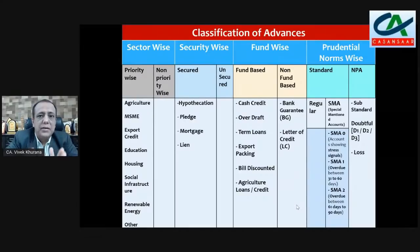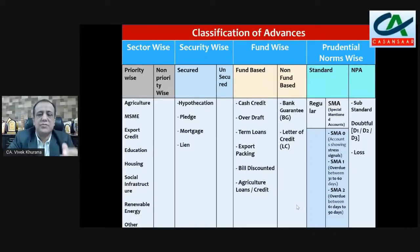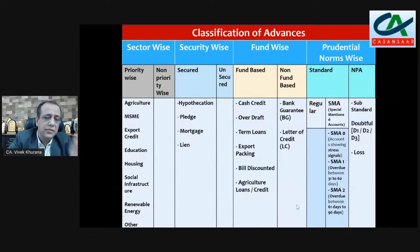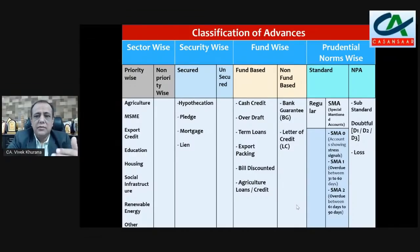Priority sector means the weaker sectors where RBI has advised banks to provide some proportion of advances. Security wise: secured — where you have some security — or unsecured, without any security. Security can be covered through hypothecation, pledge, mortgage, or lien. Fund wise: fund-based includes cash credit, overdraft, term loan, export packing credit, bill discounting, agriculture loan. Non-fund based includes bank guarantee and letter of credit.